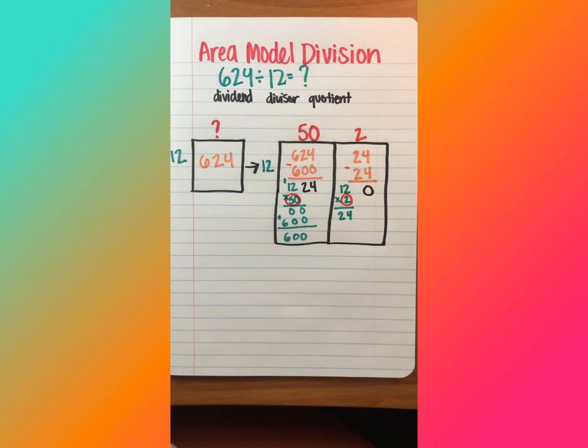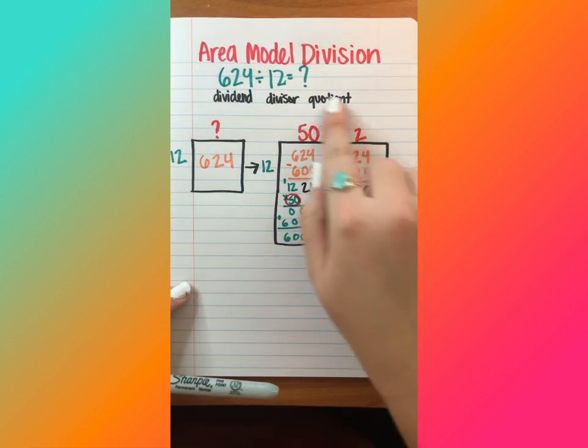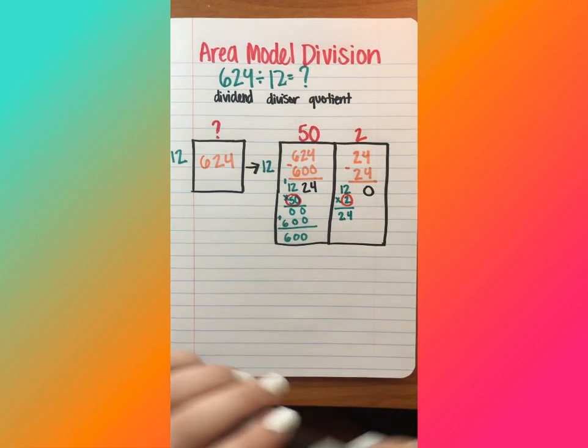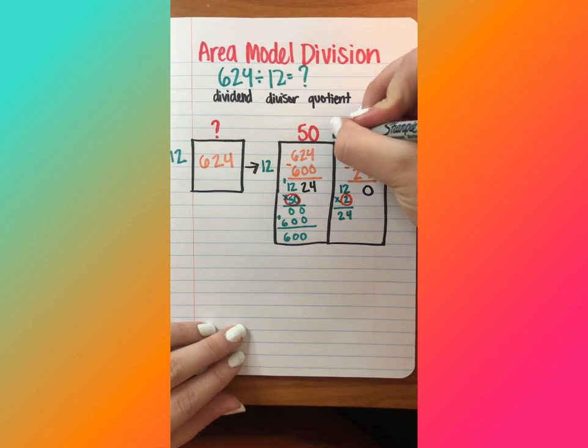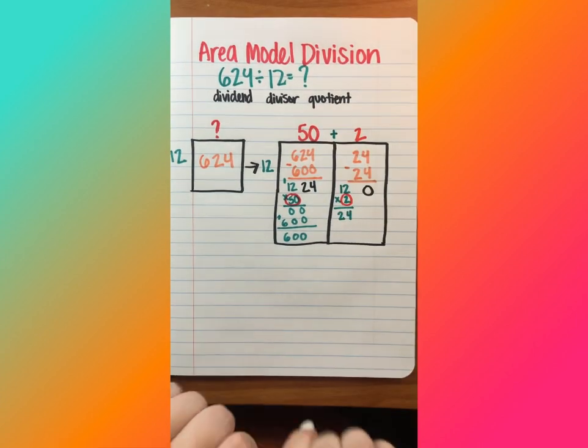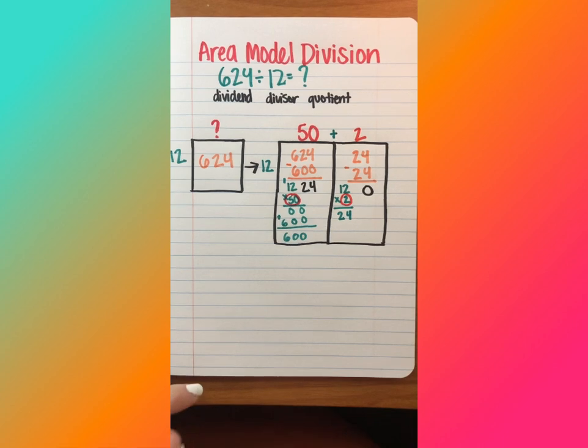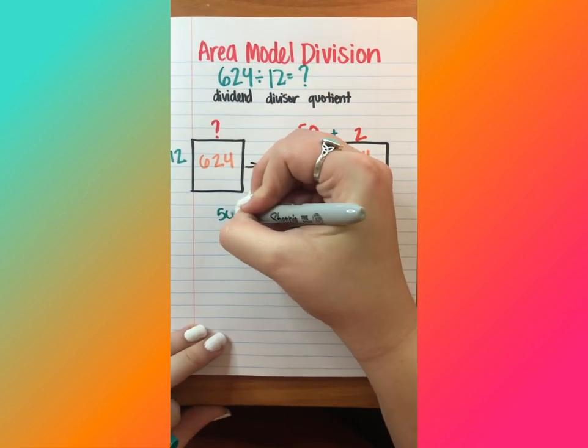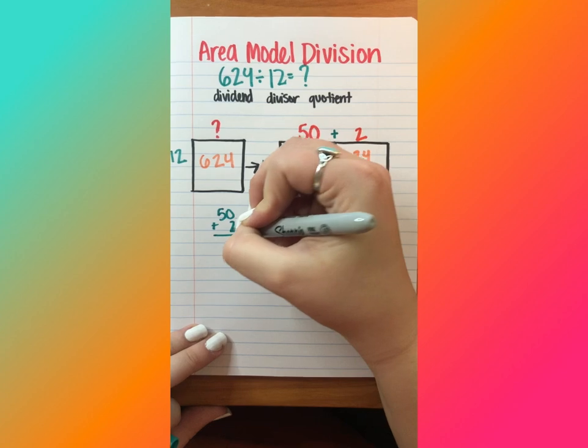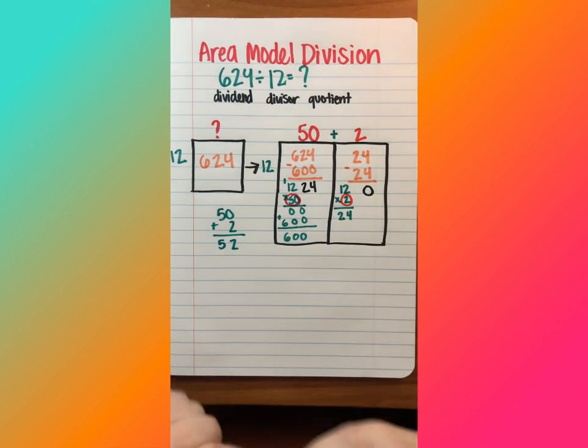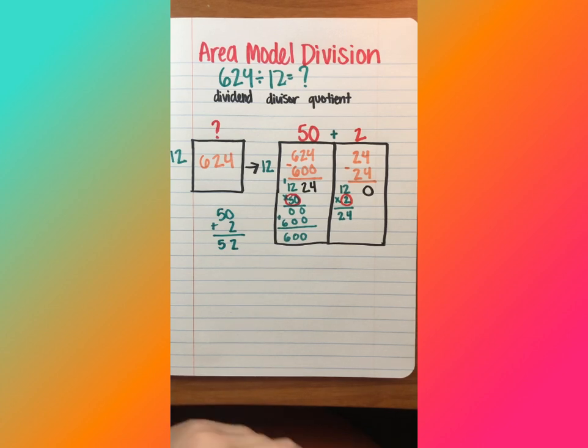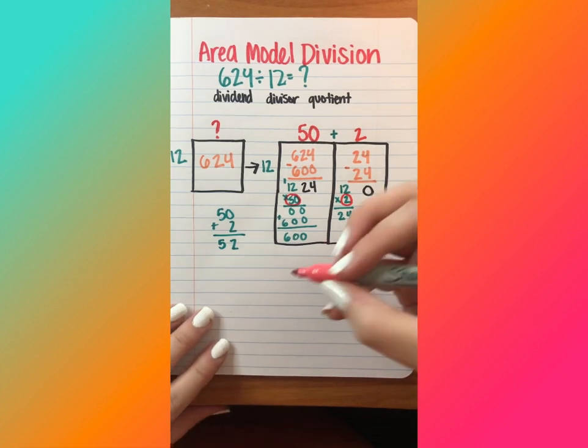Now my final step, if you circled this right here, your teacher might not give you full credit. What your teacher is looking for is for you to add up your partial quotients. So if I add 50 plus two, two plus zero is two, five plus nothing is five. So my final answer or my quotient is 52.